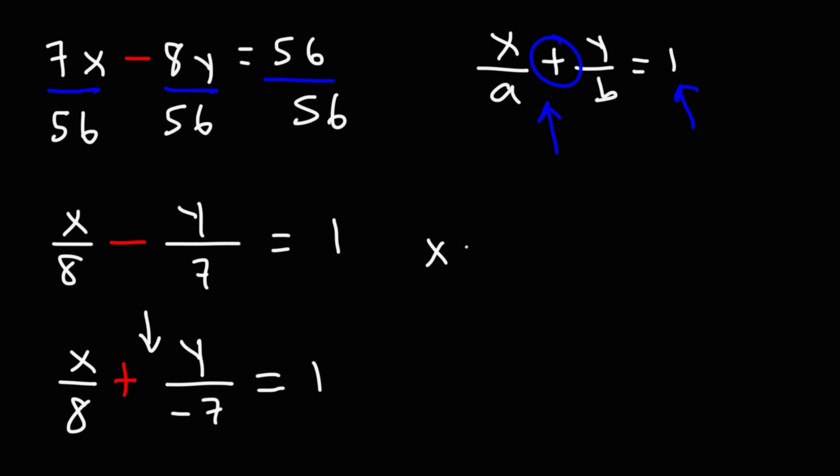So the x-intercept, that's going to be the number under x. That's 8. So we get the ordered pair 8 comma 0. The y-intercept is not going to be a positive number, but it's going to be a negative number. It's negative 7. So we get the ordered pair 0, negative 7. So those are the intercepts for this particular problem.